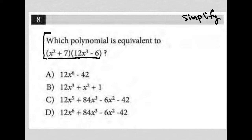So I'm going to just rewrite the expression. It says x squared plus 7, parentheses 12x cubed minus 6. The question says which polynomial is equivalent to this. So my first thought is just to simplify this the same way I would simplify any product of two binomials. I'm going to FOIL.